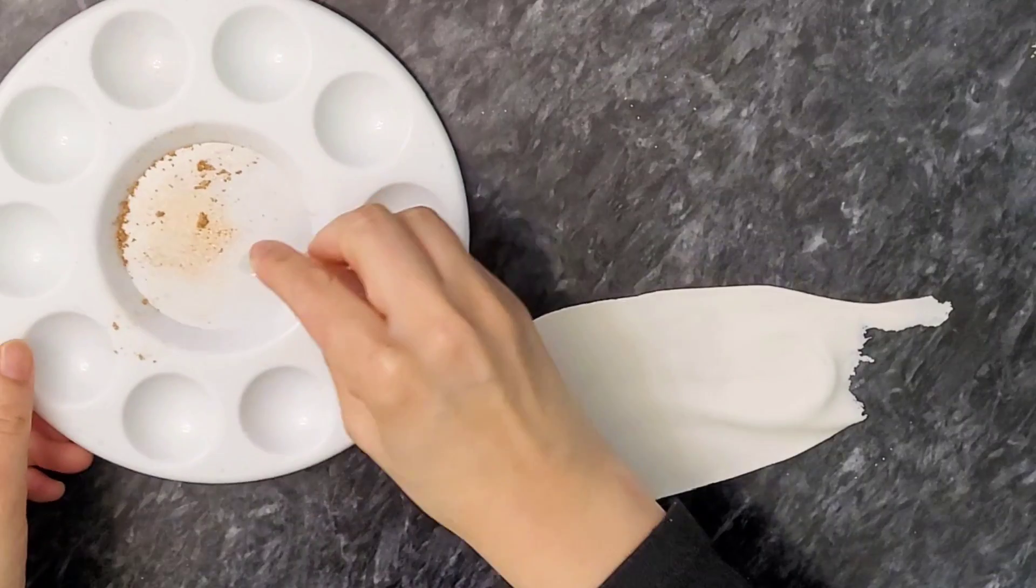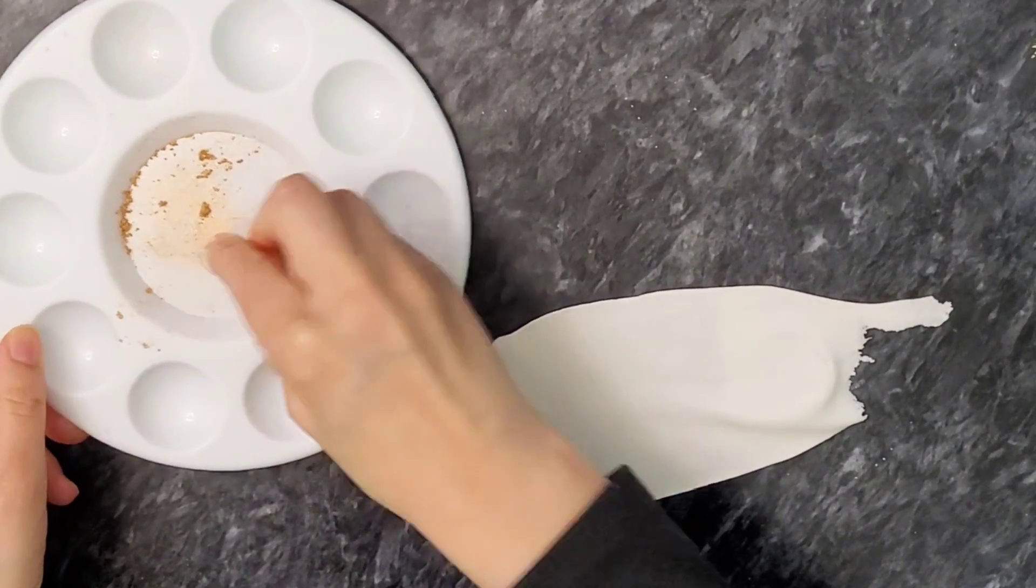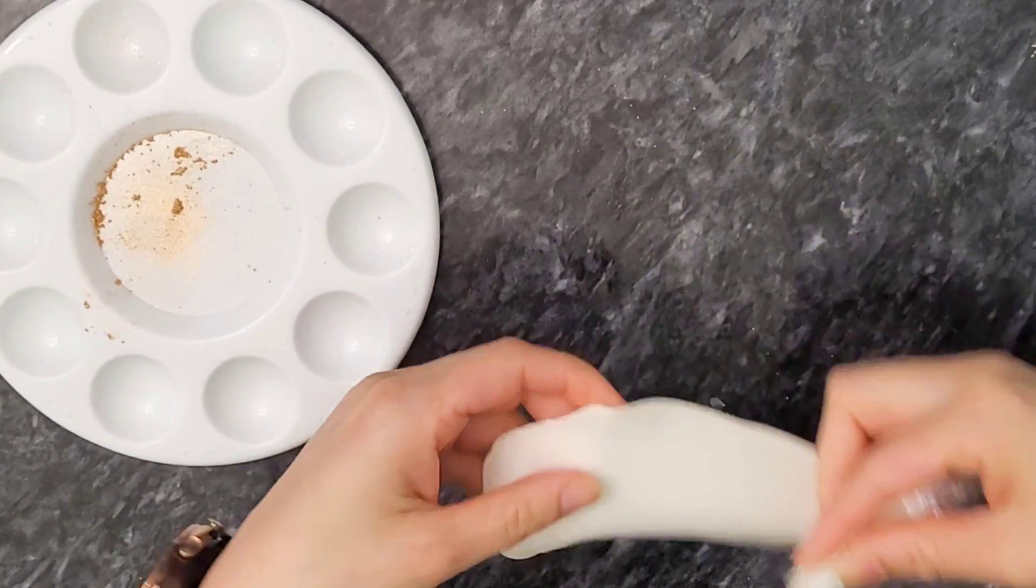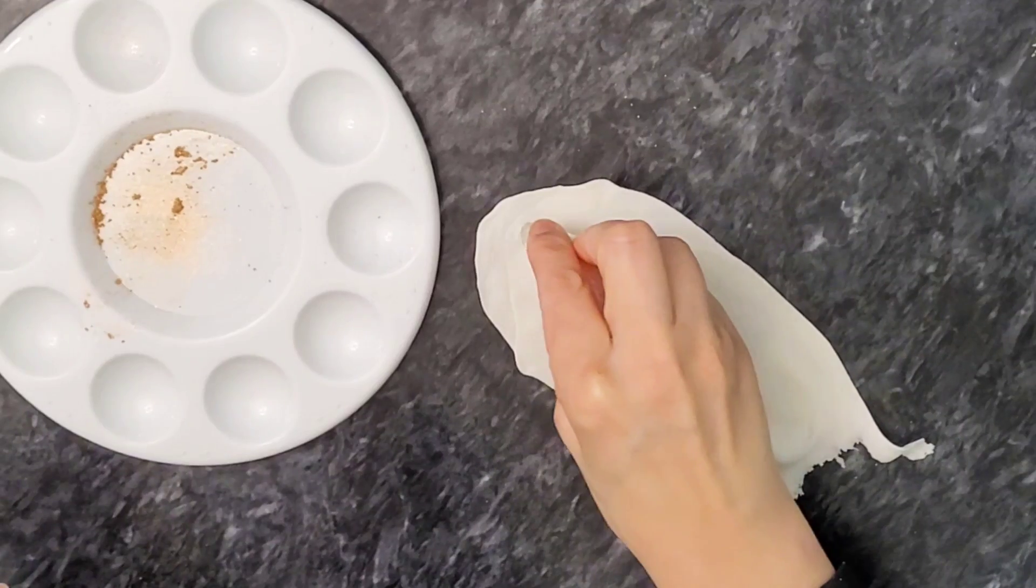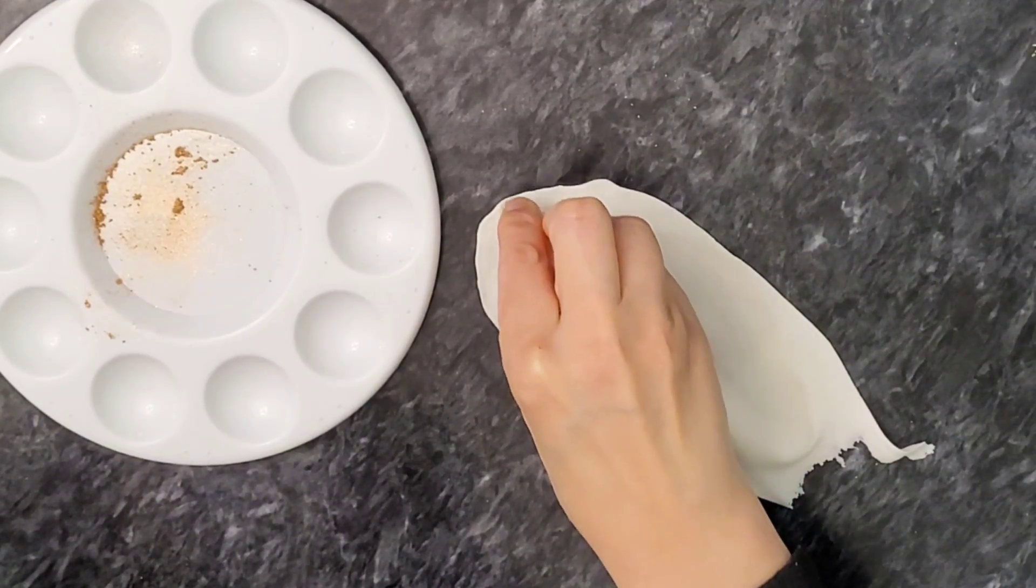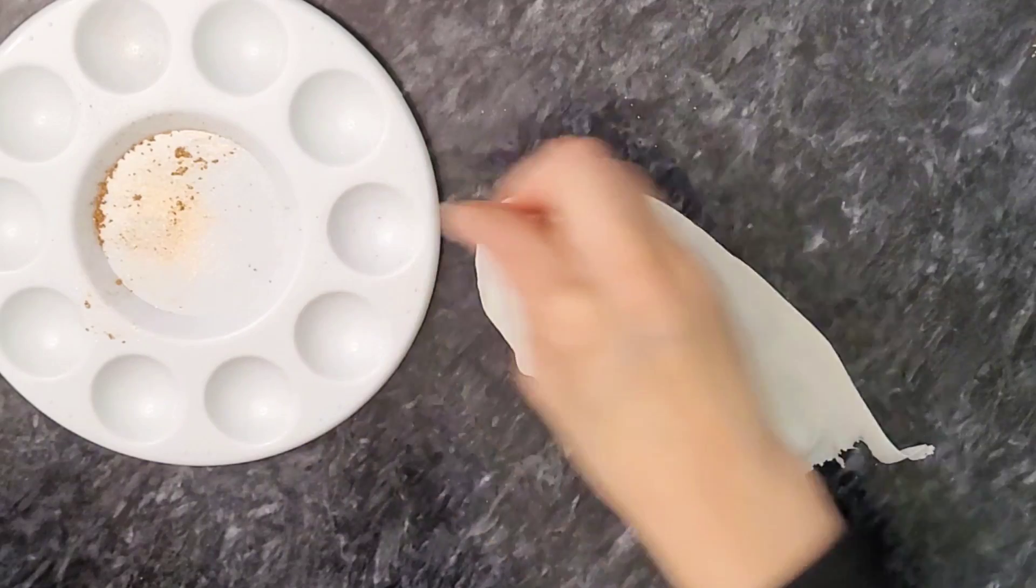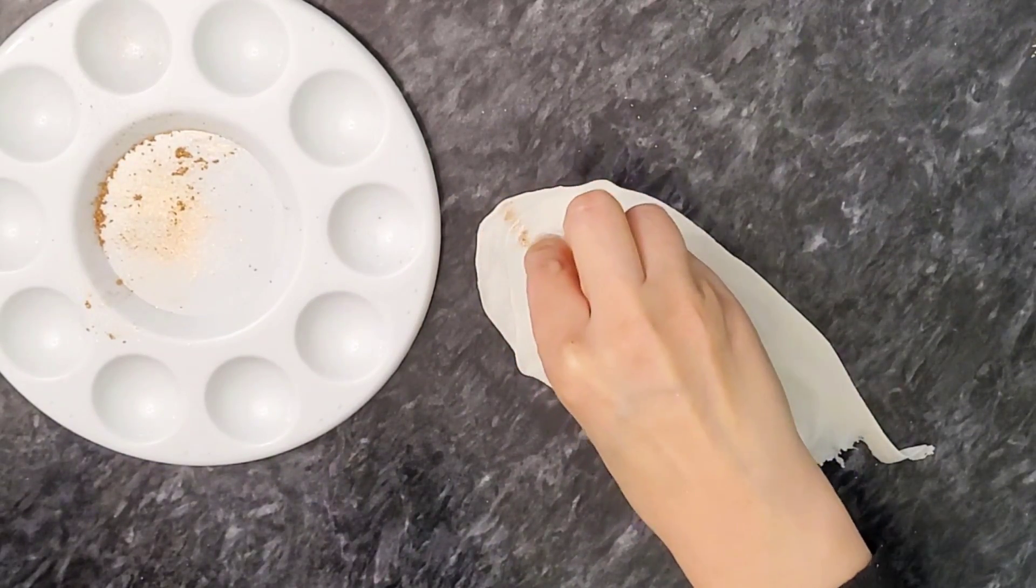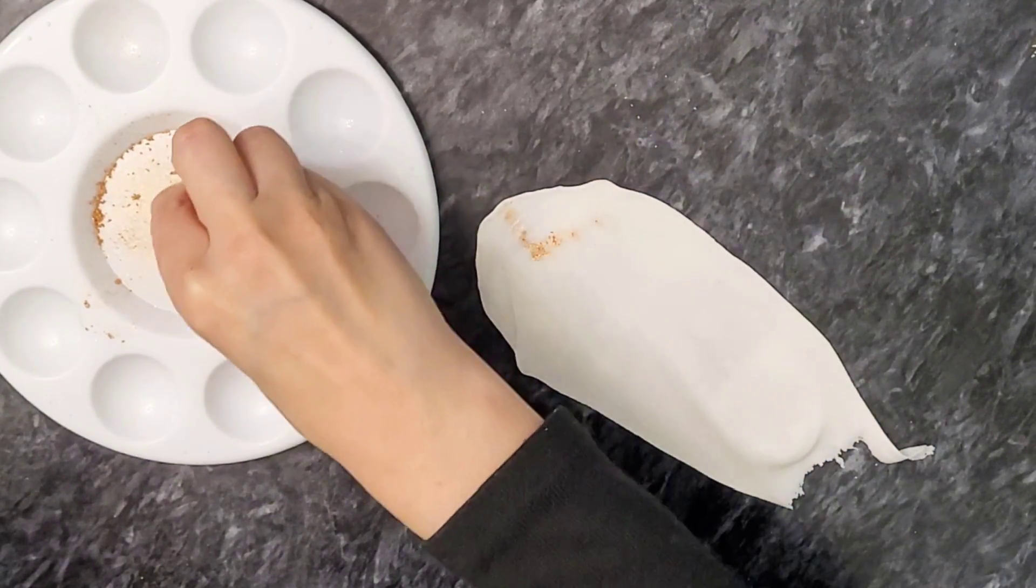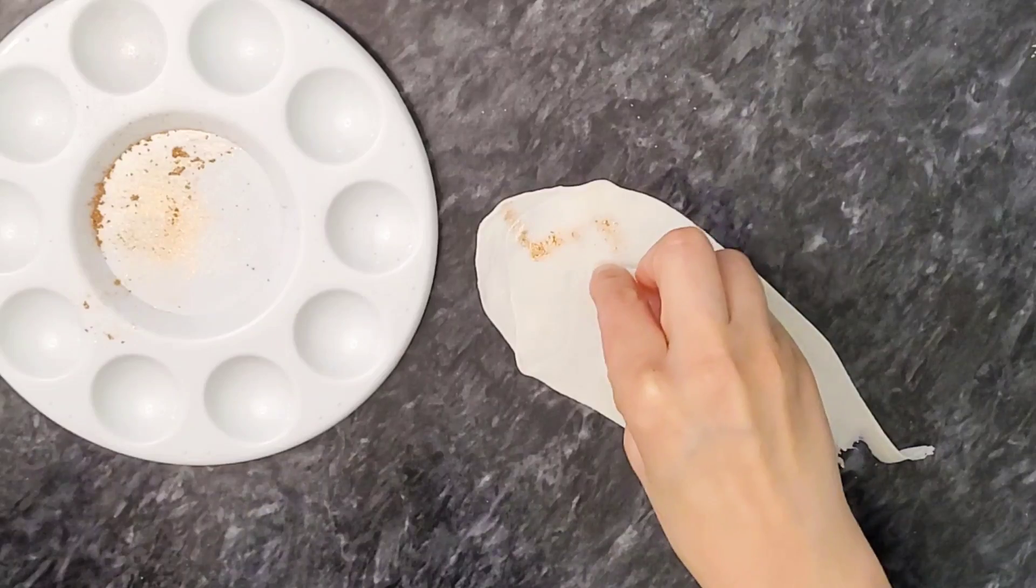Which I'm just going to dab into the luster, and then just literally tap it onto the paste. And you can use this as a replacement for gold leaf.